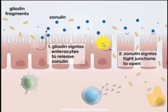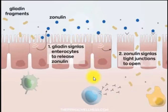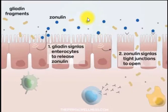Zonulin comes over and attaches to proteins called tight junction binding proteins, which keep these cells sealed tight together. Basically what you have normally is selective permeability — the food, nutrients, and substances your body wants pass through the small intestinal wall into the bloodstream and lymphatic system, while keeping out what it doesn't want.